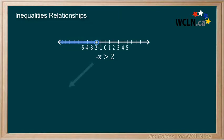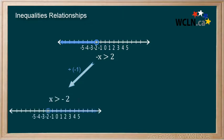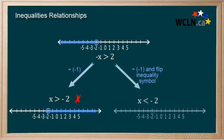For example, if we solve this inequality by dividing by negative 1, our solution becomes the opposite of the original statement. We must flip the inequality sign for our solution to be true.